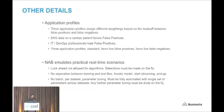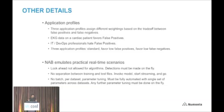In NAB, we really want to emulate a real-time practical application scenario. When you run an algorithm, you are not allowed to look ahead — detections must be made on the fly as you go. There's no separation between training and test sets. Every metric is independent: we invoke a model, start streaming the data to that detector, and you're supposed to detect anomalies as you go. There should also be no per-dataset parameter tuning — you can tune parameters overall, but the same set of parameters must be used for all metrics. Any parameter tuning must be automated and done on the fly.